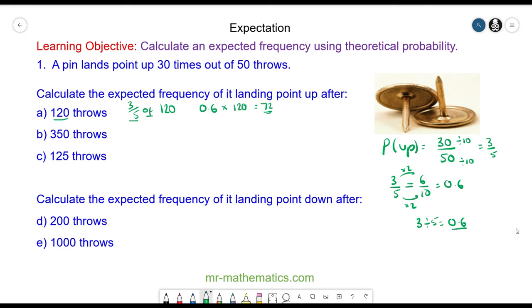For question b, with 350 throws, that would be 0.6, which is the experimental probability of it landing point up, times 350, which is our new sample, and that comes out as 210. So we would expect it to land point up 210 times.